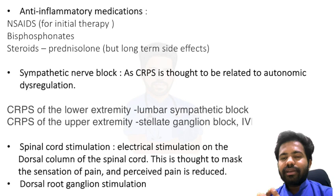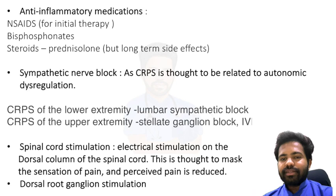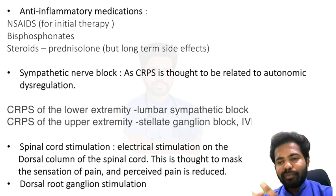As CRPS is thought to be related to autonomic dysregulation, sympathetic nerve block has shown to relieve pain to a major extent. For lower extremity CRPS, a lumbar sympathetic block is given; for upper extremity CRPS, a stellate ganglion block or IVRA (Bier's block) can be given.